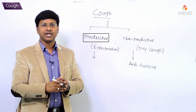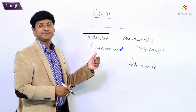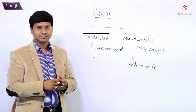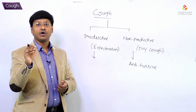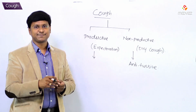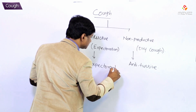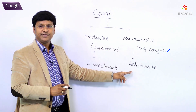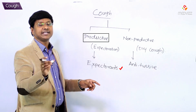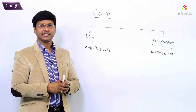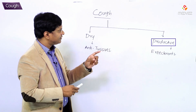By using anti-tussive agents, this dry cough or non-productive cough should be suppressed. Whereas productive cough should be allowed but made easier by using expectorants, because the expectoration may be very thick. Using expectorants, this expectoration has to be liquefied and then spit out. So for dry cough we use anti-tussives, and for productive cough we use expectorants.